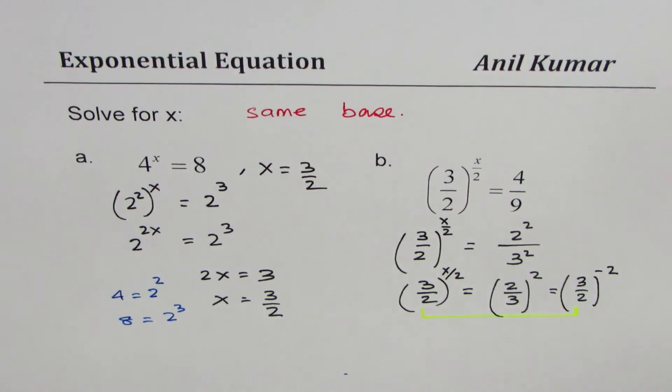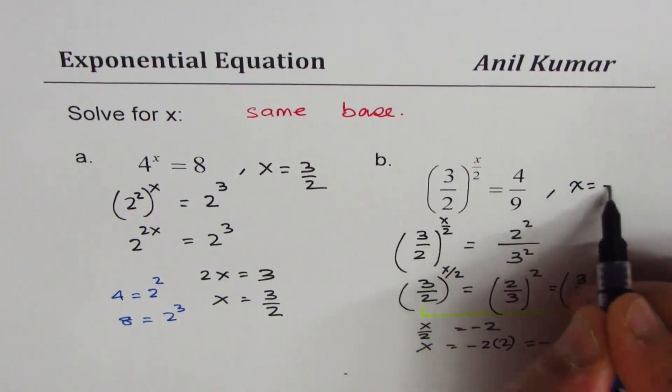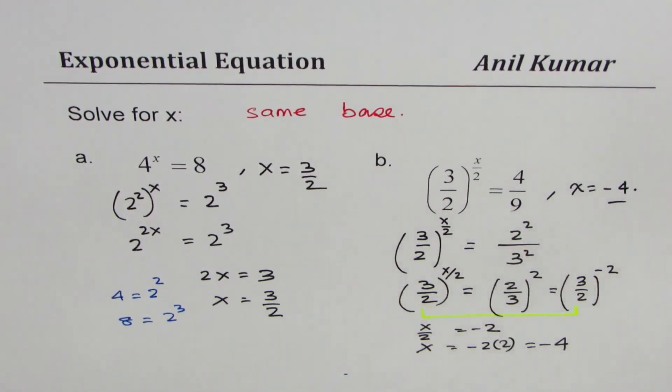So comparing the exponents, we get x/2 = -2, or x = -2 × 2, which is -4. So the answer here is x = -4.